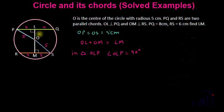So from here OL square will be 5 square minus 4 square which is equal to 25 minus 16 which is equal to 9, or you can say OL is equal to 3. We are going to take only positive number because you can't have negative lengths.